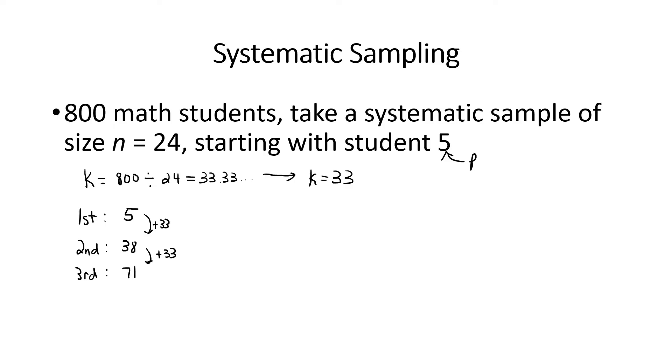Now we could keep going and list all the values that we're going to sample, but in the homework a lot of times we'd like to ask what is the last, or in this case the 24th student. How many 33s would we have to add to 5 to get to that last value? Well, we can see that 23 steps are taking place here. So we would start with our initial value of 5 and we would add 23 of those steps of size 33.